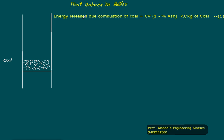Heat balance in the boiler. Energy released due to combustion of coal is Cv. We are burning the coal here. If it is a percentage of ash, then Cv equals to Cv into 1 minus percentage of ash kilojoule per kg of coal.